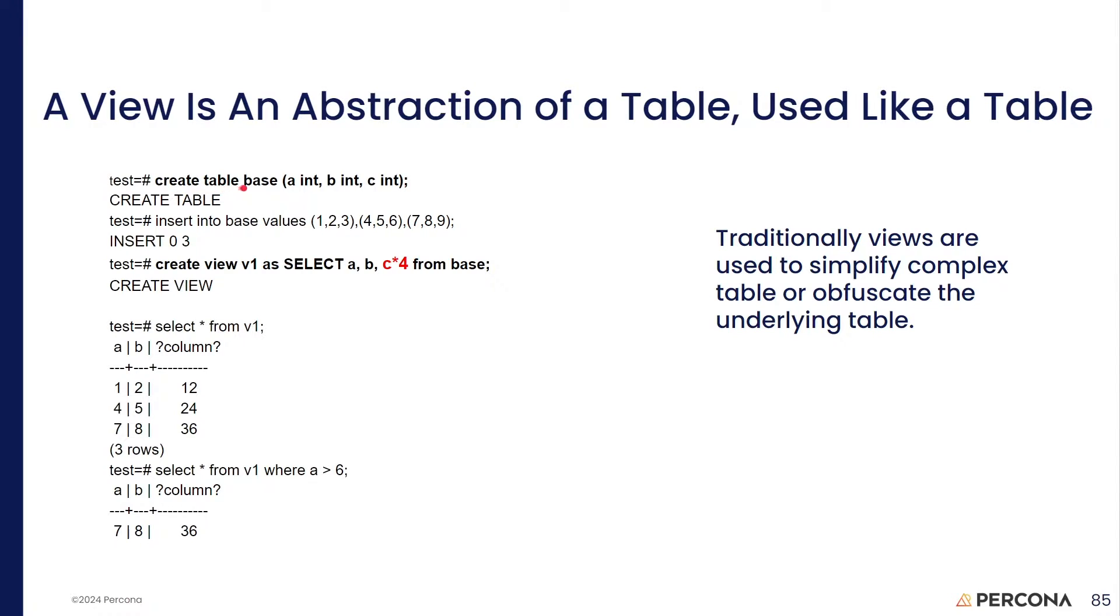We're going to create a table called base. It has three columns, A, B, and C. We insert some data, and if we create a view, we're going to create one called V1. It's going to go out to our table that we created, and it's getting a value of A, the value of B, and the value of column C, and multiply that times 4.